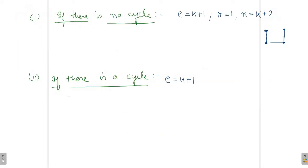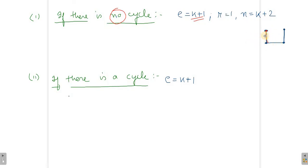So let's go ahead. Here two things can happen: either there is a cycle in the graph, or there is no cycle in the graph. First we will talk about the case when there is no cycle in the graph. In this example, for no cycle, there is only one region — just the outer region — because if there is no cycle, there can only be one region.